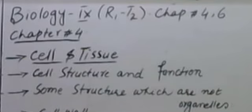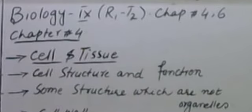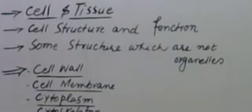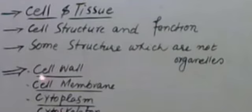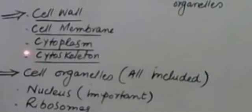Chapter number 4 is 'Cell and Tissue.' According to the smart syllabus, this chapter starts from the topic 'cellular structure and function.' This covers some structures which are not organelles. There are 4 such structures: cell wall, cell membrane, cytoplasm, and cytoskeleton.